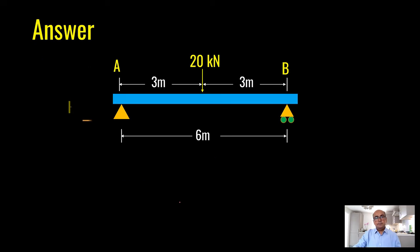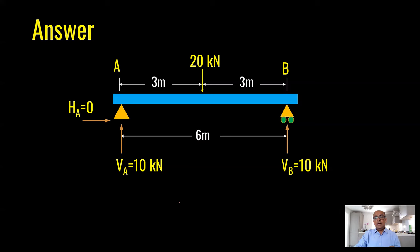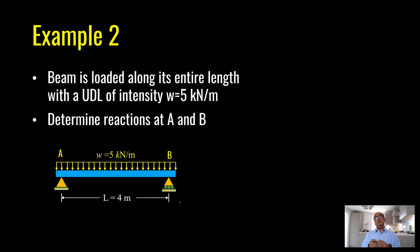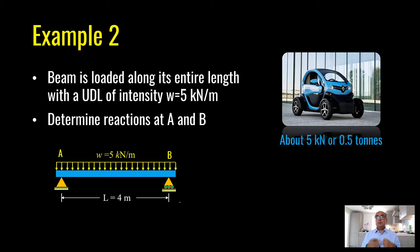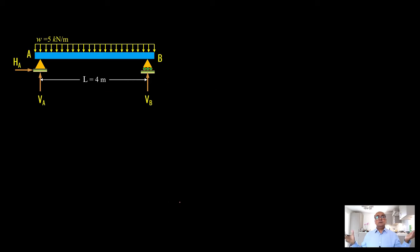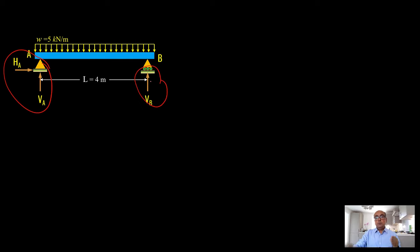The final answers: horizontal reaction HA equals zero because there is no horizontal load applied; vertical reactions VA and VB are both 10 kilonewtons. Let me go through another example with a distributed load. We have a beam of length 4 meters with an intensity of 5 kilonewtons per meter. How does 5 kilonewtons look like? The Renault Twizy weighs only 5 kilonewtons — about 0.5 tons or 500 kg — it's a single-person car. So this load is placed at each meter of the beam.